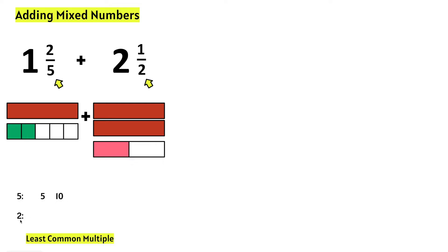Let's count by twos: two, four, six, eight, ten. We notice that the least common multiple of five and two is ten. So we can convert two-fifths into tenths and we can convert one-half into tenths.